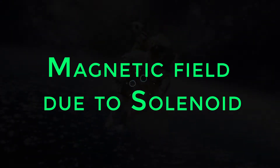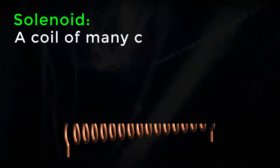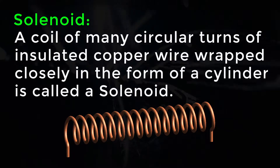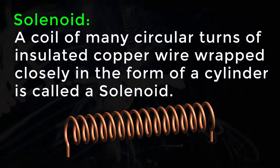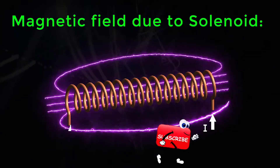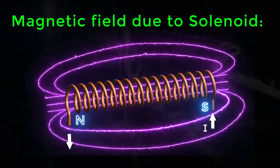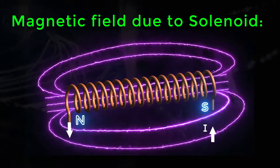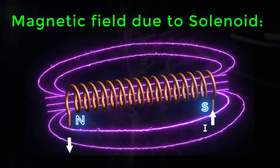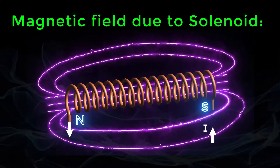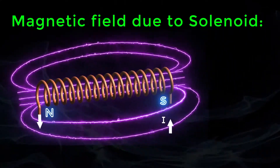Magnetic field due to solenoid. A coil of many circular turns of insulated copper wire wrapped closely in the form of a cylinder is called a solenoid. The magnetic field due to a solenoid is very much similar to that of a bar magnet. The pattern of the magnetic field around a current-carrying solenoid is similar to that of a bar magnet.